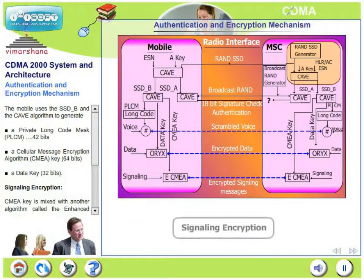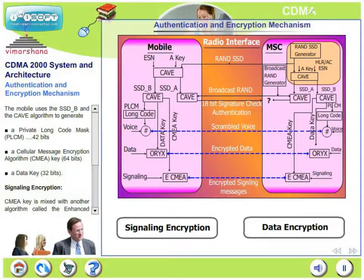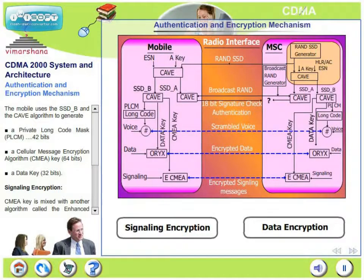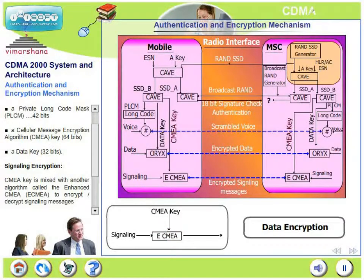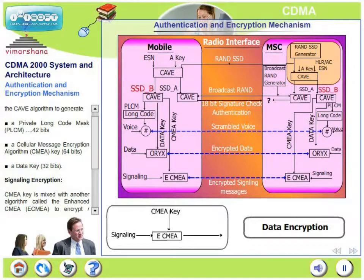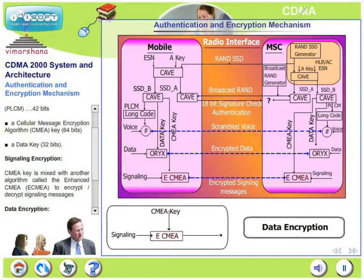In this slide, let us look at the signaling encryption and the data encryption. We know that the mobile uses SSD B and the key algorithm to generate the private long code mask, which was used for voice encryption. It also produces a cellular message encryption algorithm called CMEA consisting of 64 bits, and a data key which consists of 32 bits. This CMEA key is mixed with another algorithm called enhanced CMEA to encrypt or decrypt signaling messages. Therefore, signaling encryption uses CMEA generated from SSD B along with the enhanced CMEA algorithm.